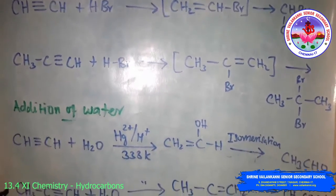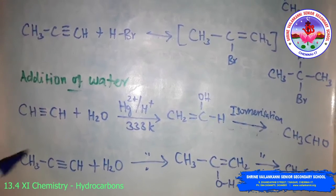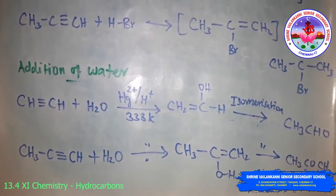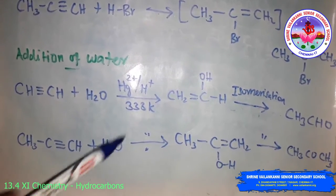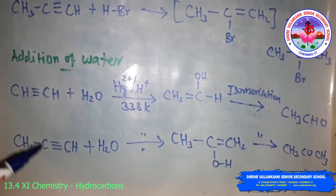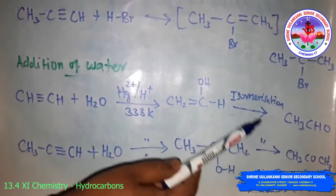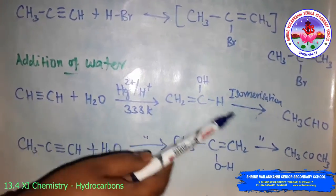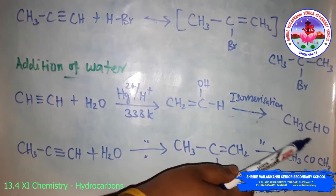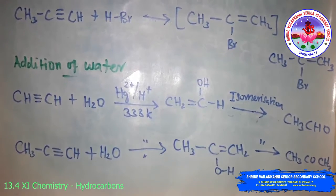Addition of water: alkynes are immiscible with water and do not react with it directly. However, one molecule of water adds to alkynes on warming with mercuric sulfate (HgSO4) and dilute sulfuric acid at 333 K to form carbonyl compounds. The product undergoes tautomerism — ethyne gives aldehyde and higher alkynes give ketones, both containing the carbonyl group.